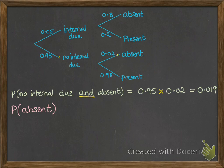What about the probability that he's absent, no matter what? We can have a look at either he's absent with an internal due or he's absent with no internal due. We already know that first one, that's the 0.019 that we just worked out.